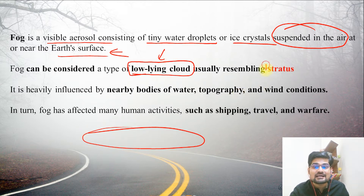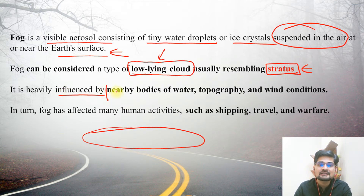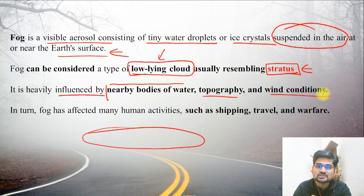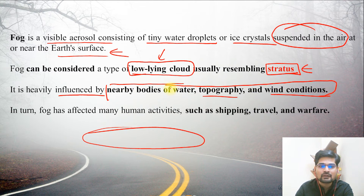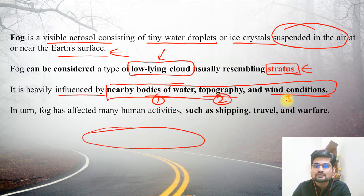Fog usually resembles stratified clouds like stratus clouds. It is heavily influenced by three important factors: nearby bodies of water, topography, and wind conditions. These three factors are very important here — they essentially control fog formation.